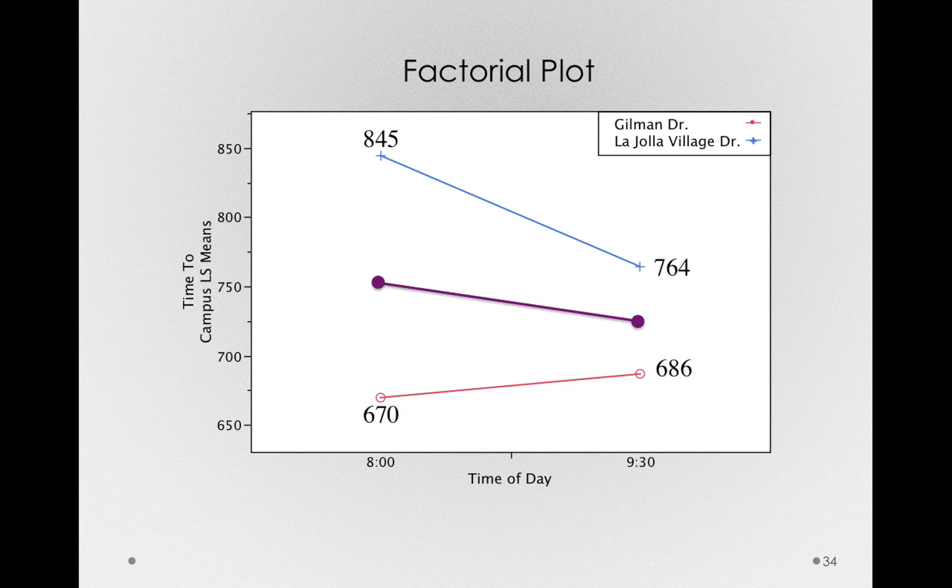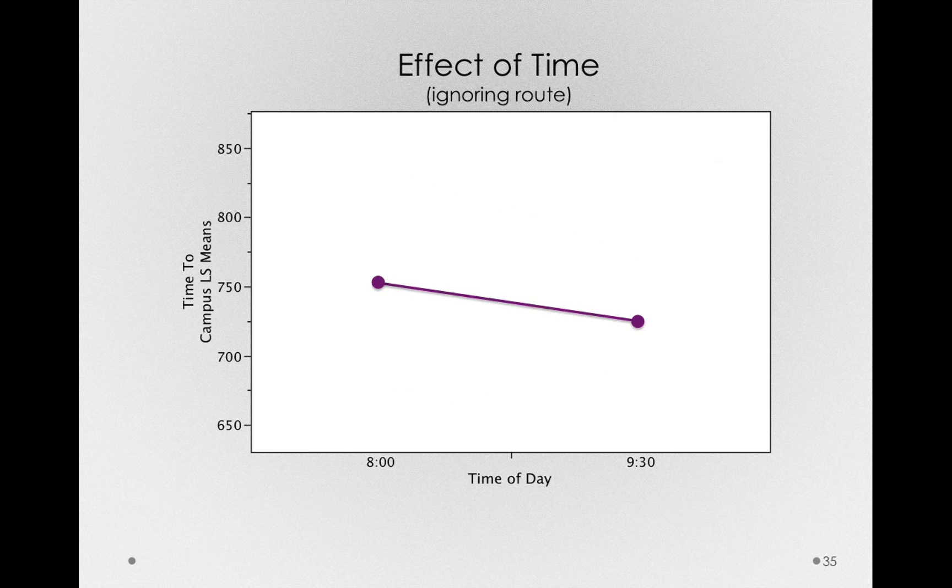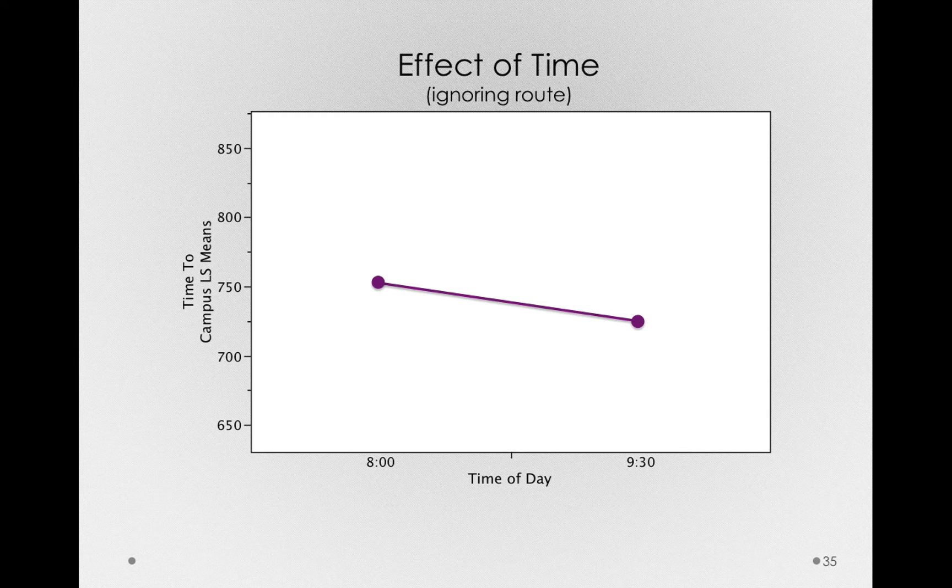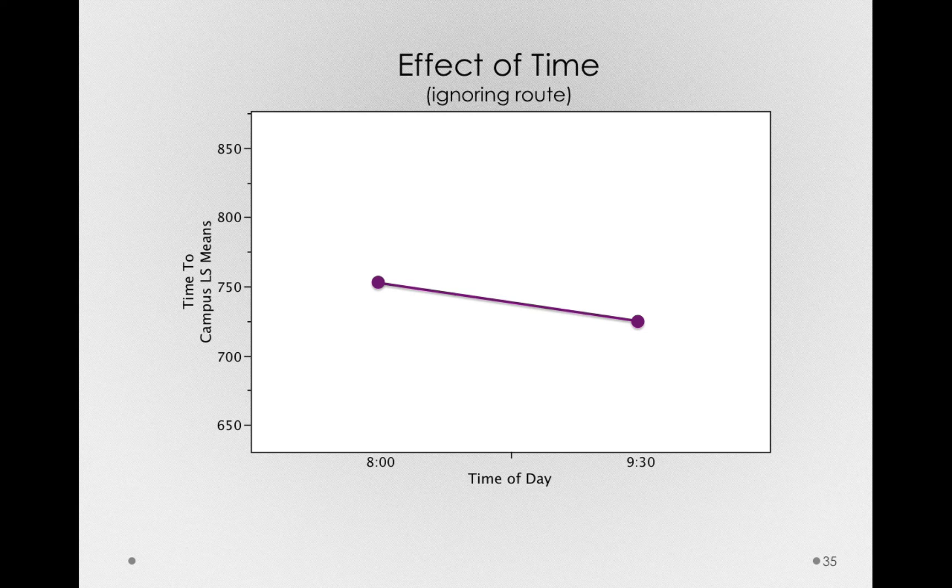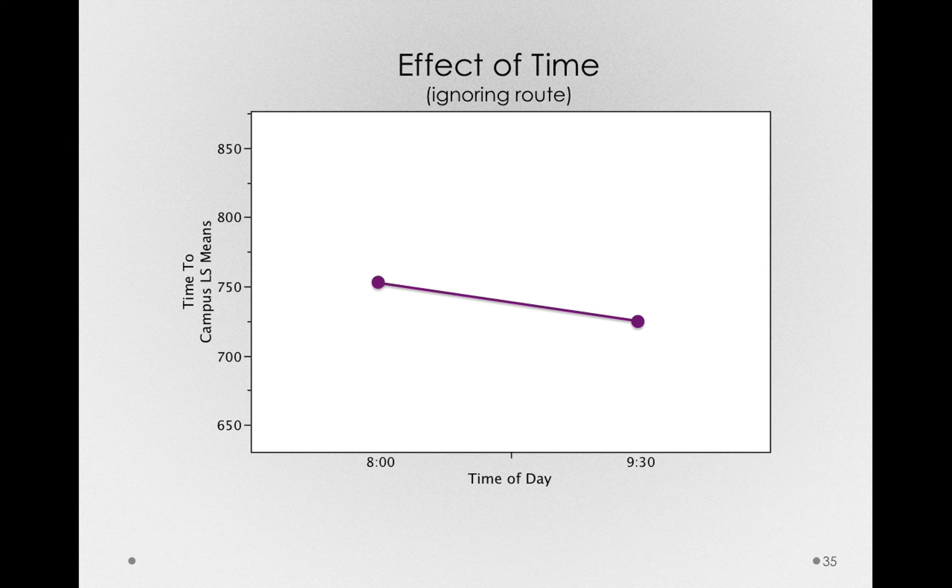Let me connect these two points with a line. And here we have the plot of the effect of time ignoring route. And looking at this, we can see that it was a little bit faster to get to campus at 9:30 than at 8 a.m. But it's not a huge effect. In fact, it's only a little bit faster to go at 9:30 than 8 a.m. on average.